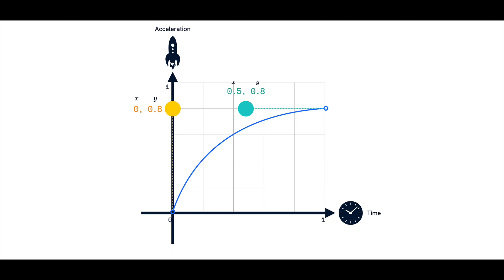Changing the positions of the two handles changes the shape of the curve, which then affects how the motion plays out. It's that easy.